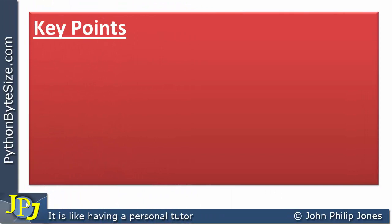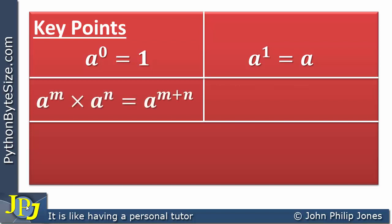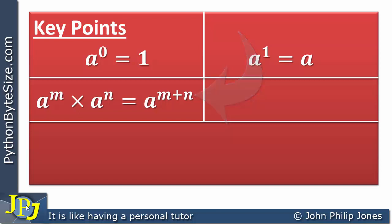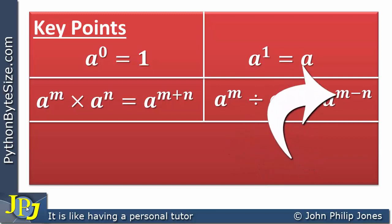Let's consider the key points taken from the previous 2 videos in the playlist and the video you're looking at now. When we consider a raised to the power of 0, we get 1 — we looked at examples of 2 to the 0 and 16 to the 0, and they all give 1. We also have a raised to the power of 1 giving us a — any base raised to the power of 1 gives us that base. We also considered the law where when you multiply together numbers raised to a power with the same base, you add the indices. We also considered the division law, where we subtract the indices.